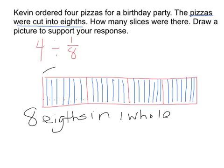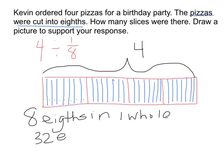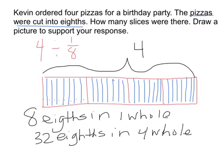We want to know how many 8ths are in four wholes. If there are 8 eighths in one whole, there are going to be 32 eighths in four wholes. Therefore, 4 divided by 1/8 is equal to 4 times 8, which is equal to 32. So Kevin will get 32 slices out of the four pizzas for his birthday party.